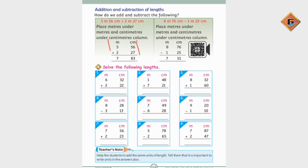In centimeters, like 6 meter and 32 centimeter plus 2 meter and 22 centimeter. So 2, 2, 4, 3, 2, 5, 6 into this is 8. So what did we get? 8 meter and 54 centimeter.